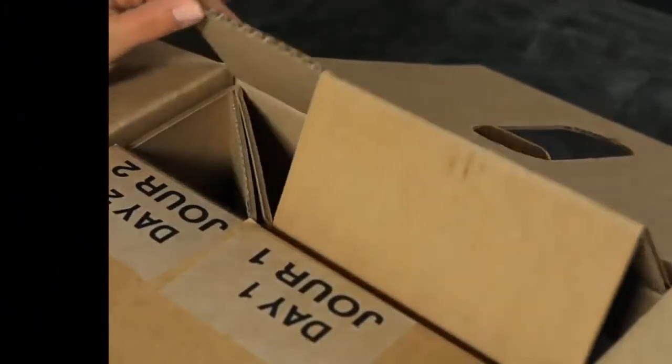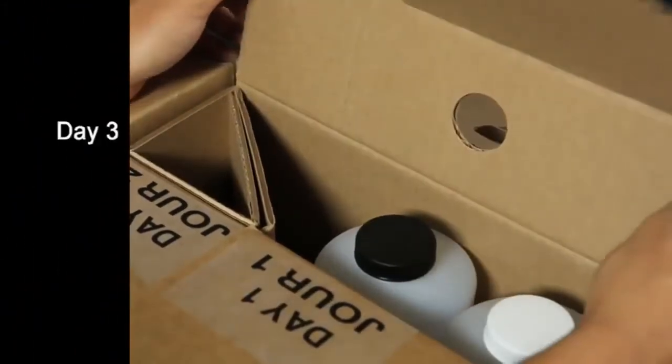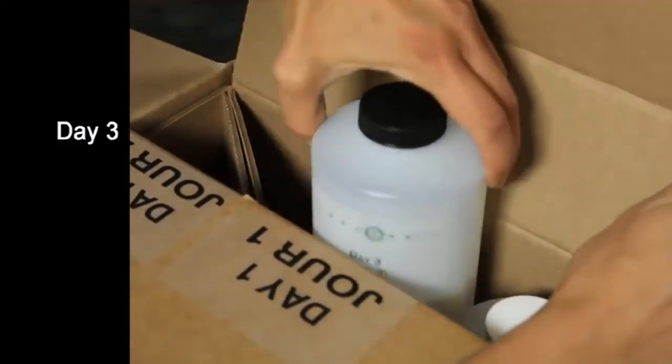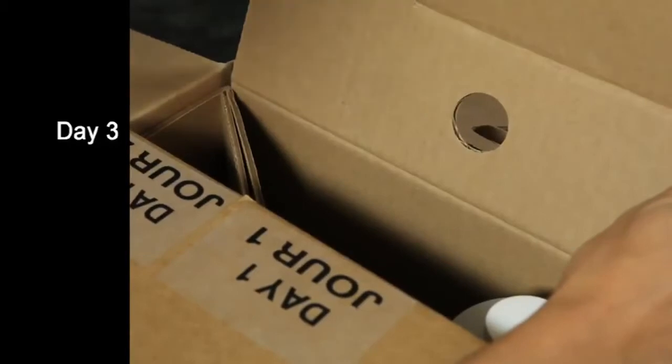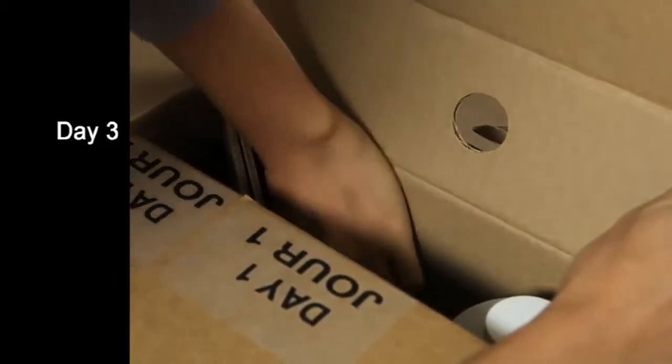Wearing hand and eye protection, open the Day 3 tab of your Encore countertop kit. Remove the two Color Lock Sealer bottles with the black caps and green label marked Part A and Part B.